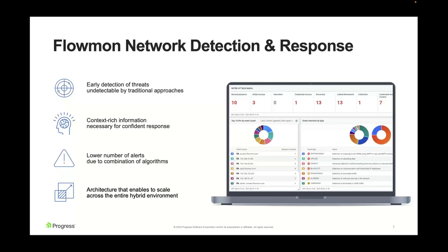Our approach is different, and what sets us apart is that our early detection can be much more precise and help you find attacks that are undetectable by traditional approaches. We also provide context-rich information that will immediately help you understand what's going on and respond fast and with confidence. Due to incorporation of multiple methods, we give you a lower number of alerts — before showing something we try to make sense of it — providing noiseless insight and only the amount of information you need for response. Our architecture enables scaling across the entire IT environment and delivering the same visibility and detection capabilities across your entire landscape.